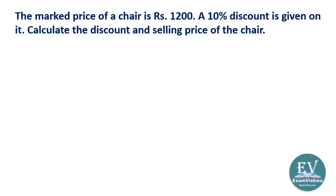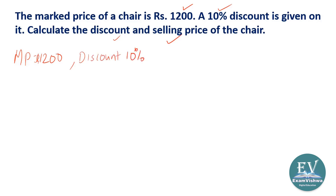The market price of a chair is 1200 rupees, and the shopkeeper is selling it at 10 percent discount. You are asked to calculate the discount and selling price. 10 percent discount means for every 100 rupees, 10 rupees discount — so on 1200 rupees market price there is a question. The market price is 1200 rupees and discount percentage is 10 percent — these two are given.